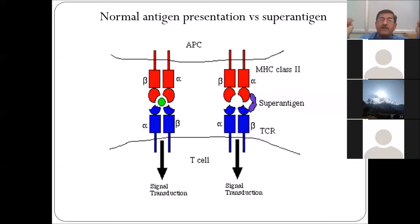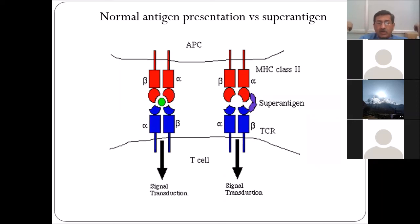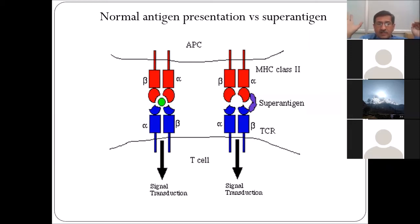The route is also important for determining the best route of vaccine administration and the dose. When the COVID vaccine was first introduced, four weeks between doses was considered sufficient, but it has since been increased to six to eight weeks. Studies show which approach produces the best immune response. If you increase the dose, the immune response increases, but you will eventually reach a stage called immunological paralysis — beyond a fixed dose there is no benefit, and in fact the immune system stops responding.